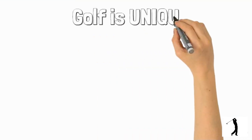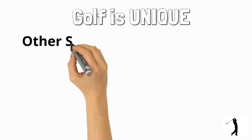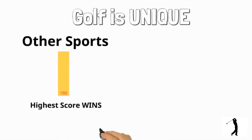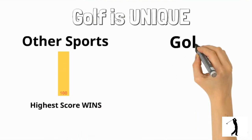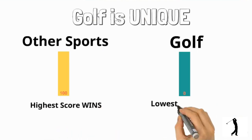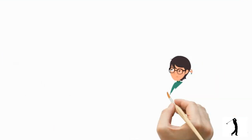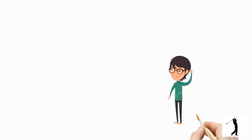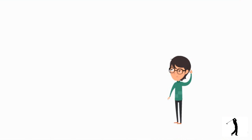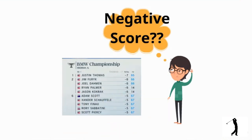Let me start by saying that golf is a unique sport. While in every other sport the highest score wins, in golf it is exactly the opposite. However, people often get confused when they see the score as a negative number on the television screen. So let me try and explain.